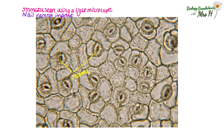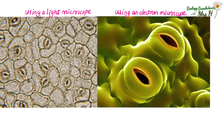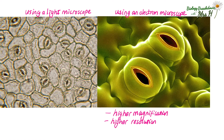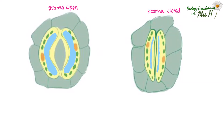You can see that each stoma is surrounded by a pair of cells, and these pairs of cells are called guard cells. Here you can see how the higher magnification and higher resolution enable us to see the stomata and guard cells much more clearly with an electron microscope. It is the guard cells that control the opening and closing of the stomata.